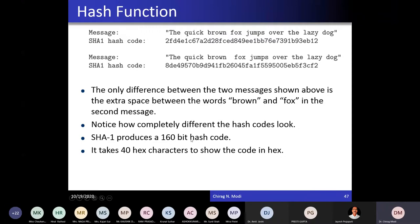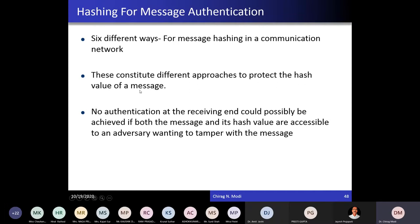SHA-1 produces a 160-bit hash code, as you can see here, and it takes 40 hexadecimal characters to show the code. So how we can use the hash code for authentication purposes — for message authentication. The first requirement of hash is integrity: it can help to achieve the integrity of the message. The second property is that it offers message authentication.